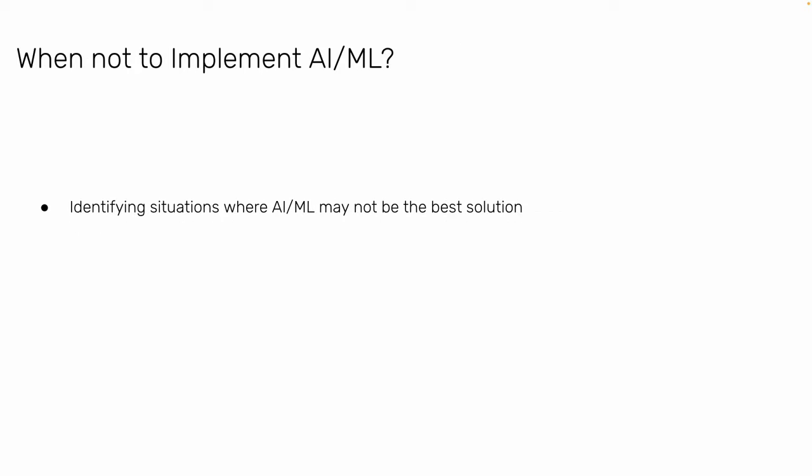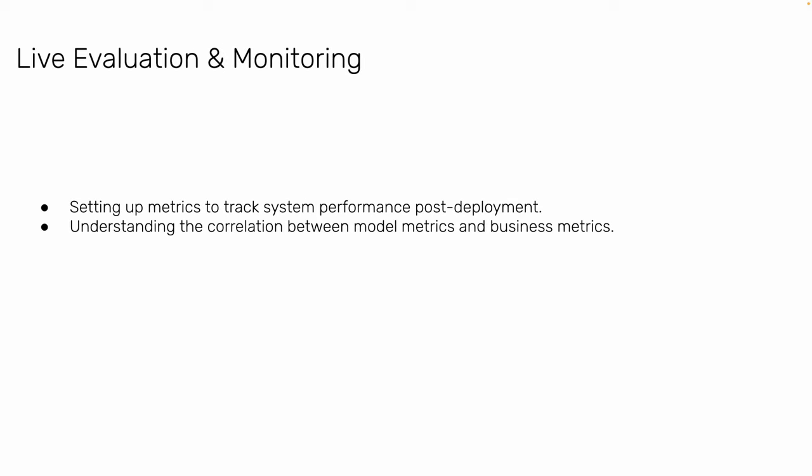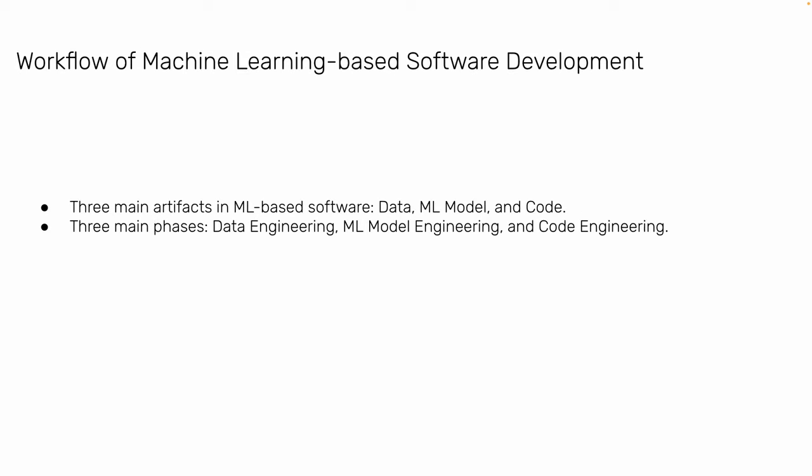Set up metrics to track and monitor your model. Once your model is deployed — for example in spam detection — you need a matrix to check continuously whether your model is giving wrong predictions. Also identify situations where AI/ML may not be the best solution; some subtasks might be solvable without AI/ML, which is important because the cost of implementing an AI/ML solution is quite large.